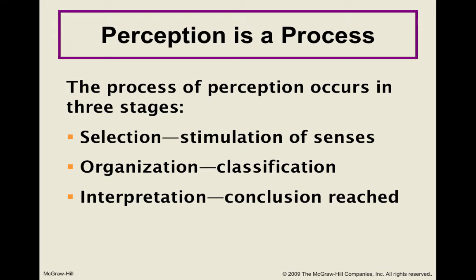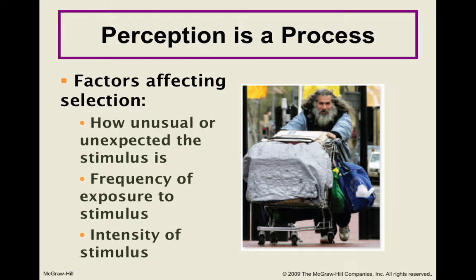Let's start with selection. In the selection process, that begins with the stimulation of our senses — something attracts our attention. Things are happening around us all the time and we can't pay attention to everything. That's where selection comes in. It may or may not be a conscious decision about what we pay attention to. Usually it's not. However, some things might stand out more than others — if there's something unusual or unexpected, our attention goes straight to that.